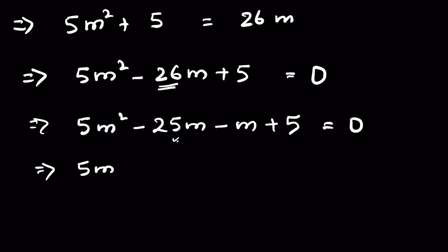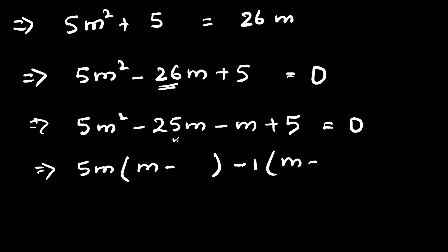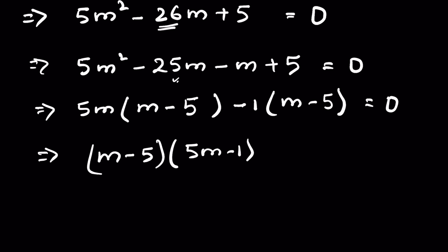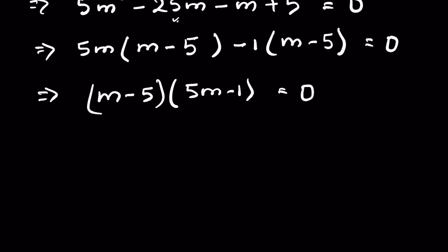Now factor out 5m from the first two terms: 5m(m minus 5), and then minus 1(m minus 5) equals 0. Since (m minus 5) is common, we write (m minus 5)(5m minus 1) equals 0.